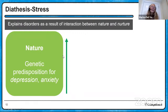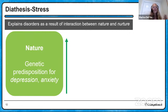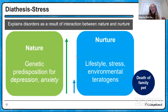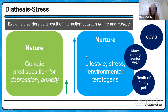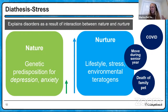Another explanation of disorders is the diathesis-stress approach, which explains disorders in terms of the interaction between nature and nurture. If somebody is born with a high diathesis — a high genetic vulnerability — for depression or anxiety, only a small amount of environmental stress could bring about the display of that disorder, like the death of a family pet. If the genetic predisposition is low, it would take many more stressors — death of a pet, moving during senior year, COVID — to bring about depression or anxiety.